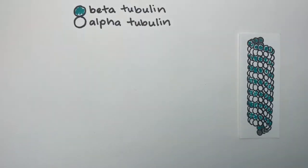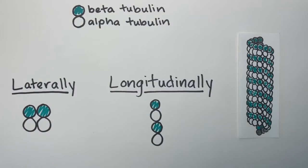The microtubule is made up of protein dimers of alpha and beta tubulin. These dimers interact laterally and longitudinally to form the 13-member tube of the microtubule.